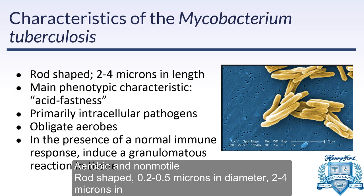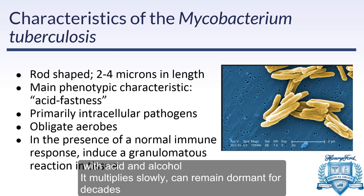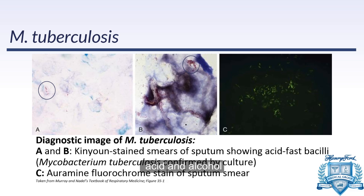Starting with basics about the bacteria: it's rod-shaped, two to four microns in length. Its main phenotypic characteristic is acid-fastness, meaning it resists decolorization with acid and alcohol. It's primarily intracellular and an obligate aerobe, although uniquely it is able to survive in low oxygen tension states. In the presence of a normal immune response, it induces a granulomatous reaction. Here in figures A and B we have sputum smears showing the acid fast bacilli, and figure C shows the fluorochrome stain.